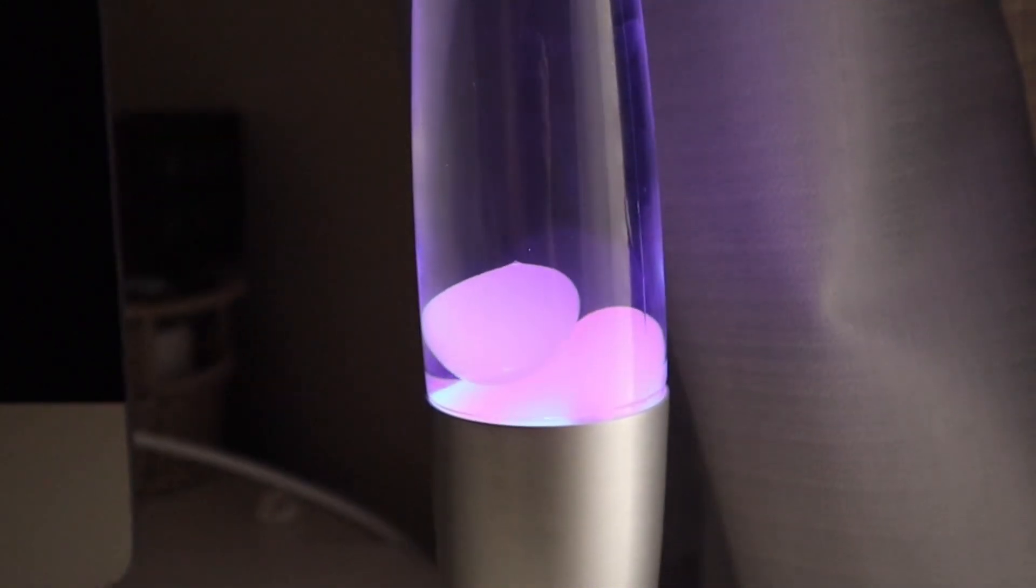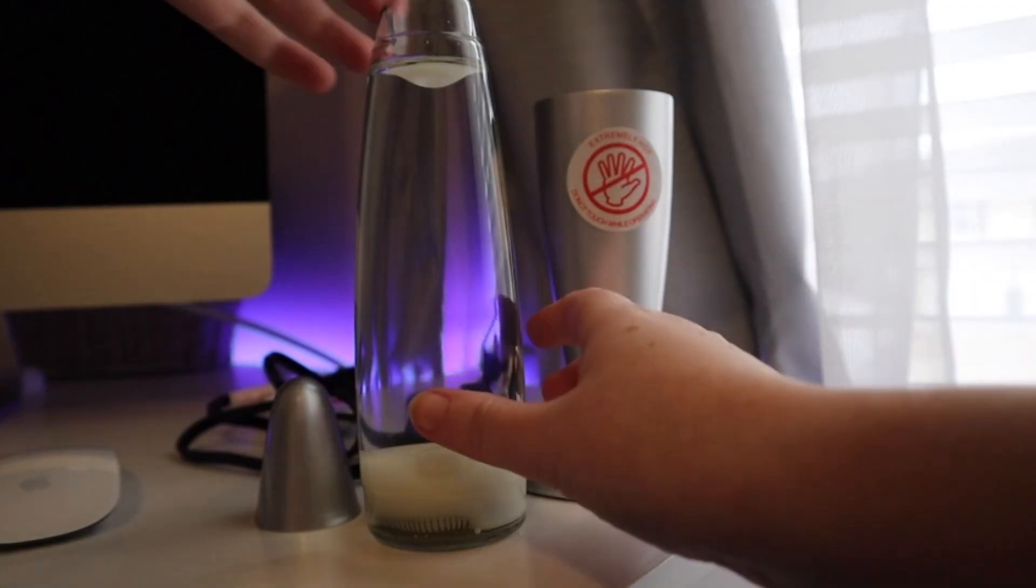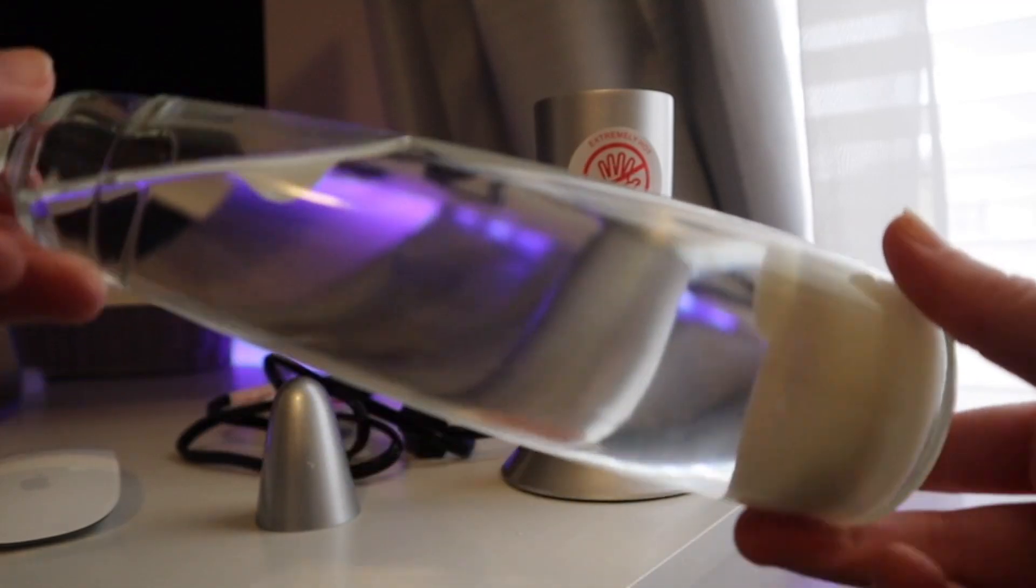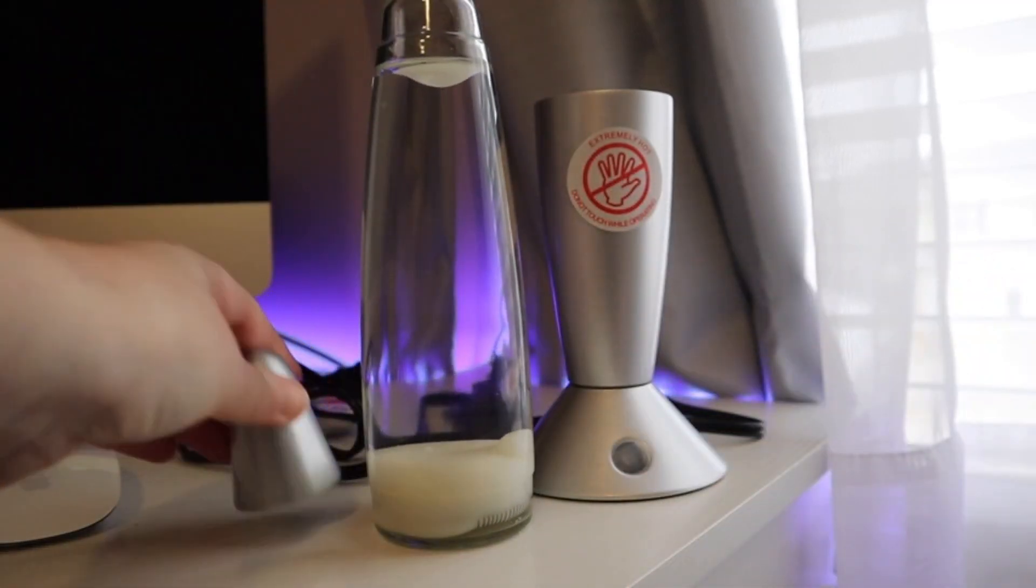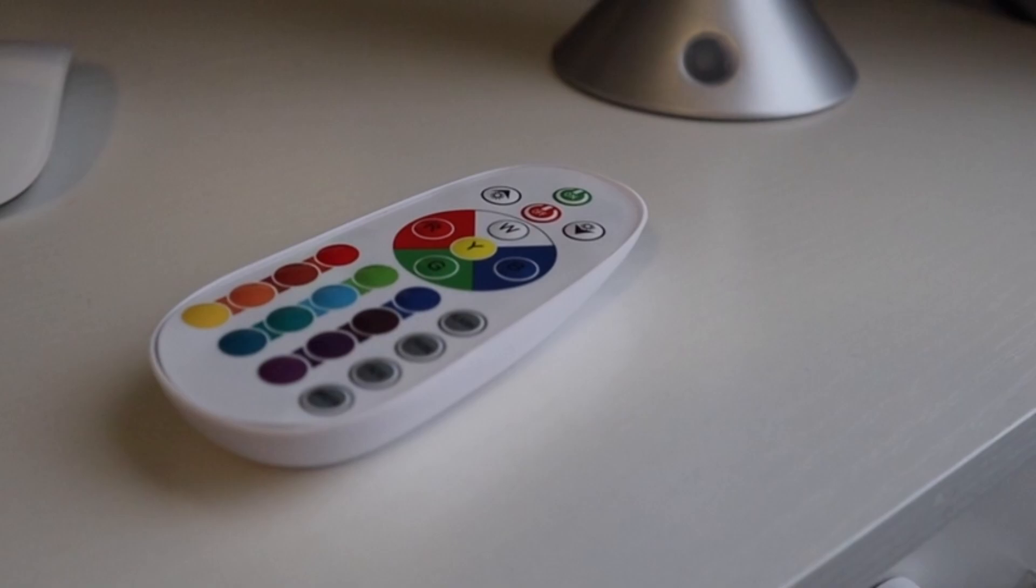Hey everyone, this is a quick review and demo of this really cool lava lamp. So the lamp comes with the glass bottle that has the wax and water inside. It also comes with the cap, the base, and an RGB remote.